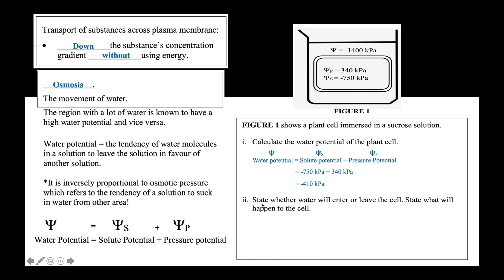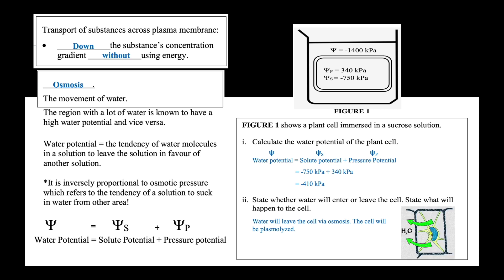It is very important for you to write down the unit. The second question: state whether water will enter or leave the cell. Since we now know that the water potential inside the cell is negative 410 kPa, we can compare it with the water potential of the solution, negative 1,400 kPa. Negative 410 kPa is a much bigger value compared to negative 1,400 kPa. Since water always moves from a region of high water potential to low water potential, water molecules will leave the cell via osmosis, causing the cell to be plasmolyzed.